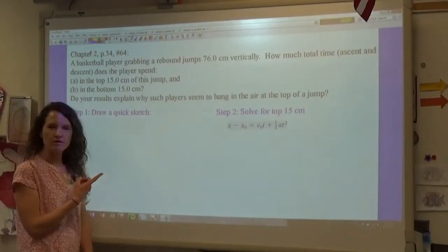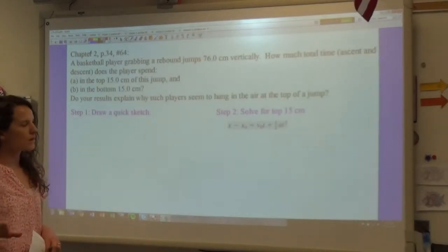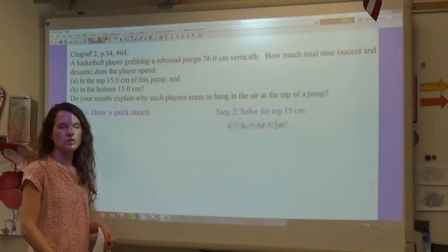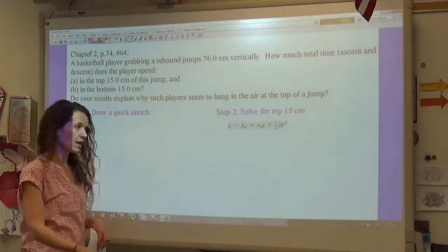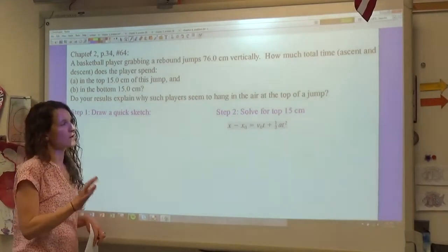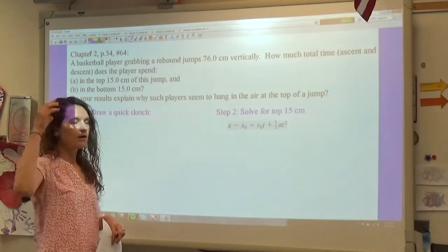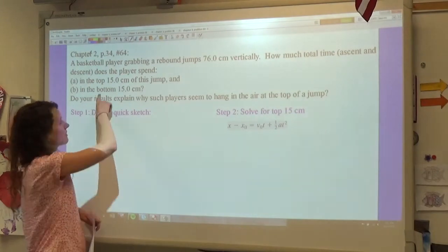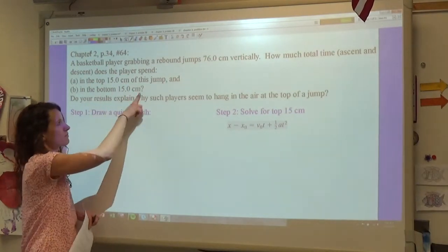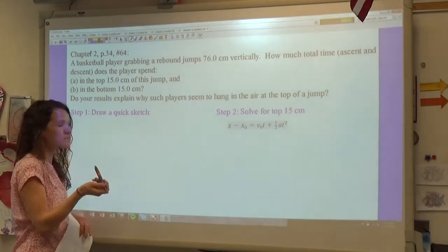Hi, this is problem number 64 from chapter 2. This is the one where we are talking about a basketball player who jumps straight up into the air and then comes down, and we are trying to solve for how long that player is in the air at the top 15 centimeters of their jump and then the bottom 15 centimeters of their jump.